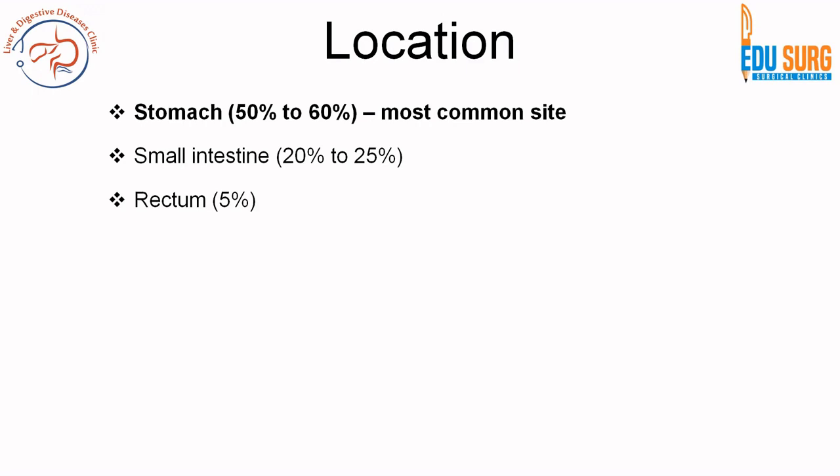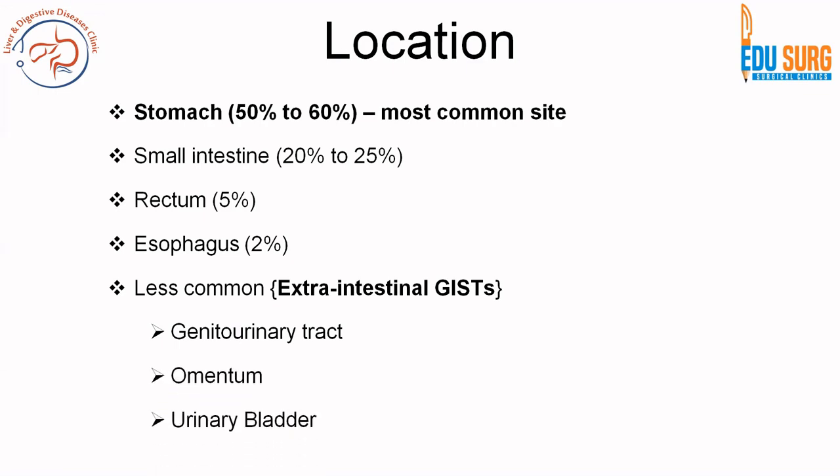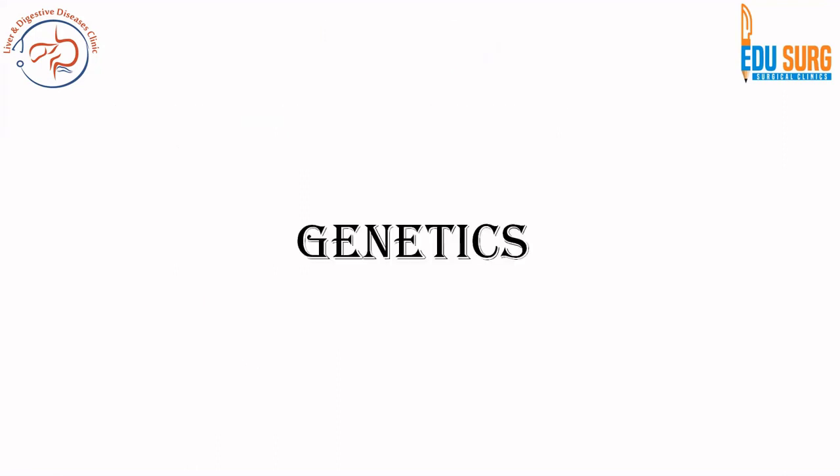Remember this sequence because the reverse is important in prognosis — stomach has the best prognosis, followed by small intestine, and then rectum which has the worst prognosis. GIST can also be seen in the esophagus, and outside the GIT it is known as extra-intestinal GIST, which can occur in the genitourinary tract, omentum (omental GIST), and urinary bladder.